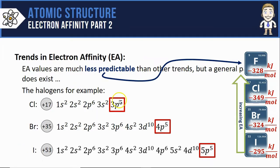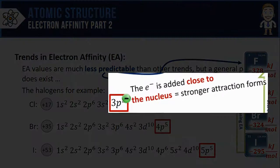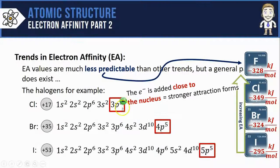In chlorine for example if I were to give it an electron that electron is going to enter the outermost valence shell in this case 3p. The 3p orbitals are closer to the nucleus so when the electron is added there a stronger attraction forms between that electron and the nucleus.